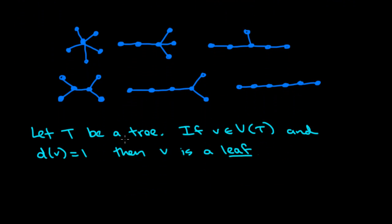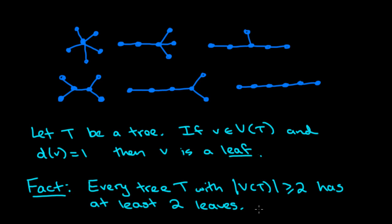So let's write this down. If T is a tree, and we have a vertex in that tree which has degree one, then that vertex is called a leaf. Now, the first little fact about trees is that every tree with at least two vertices has at least two leaves. Here it is. So we have any tree T, and the number of vertices of that tree is at least two. Then that tree will have at least two leaves.